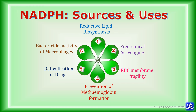In summary, NADPH is the reduced form of NADP+. The three sources of NADPH are: the HMP pathway, conversion of malate to pyruvate by malic enzyme, and cytosolic isocitrate dehydrogenase. The uses of NADPH include reductive lipid biosynthesis, free radical scavenging, protecting RBC membrane integrity, prevention of methemoglobin formation, detoxification of drugs, and bactericidal activity of macrophages. Thank you for watching.